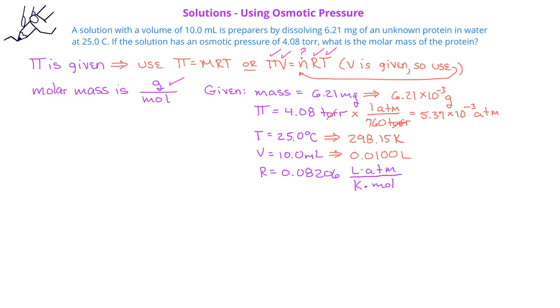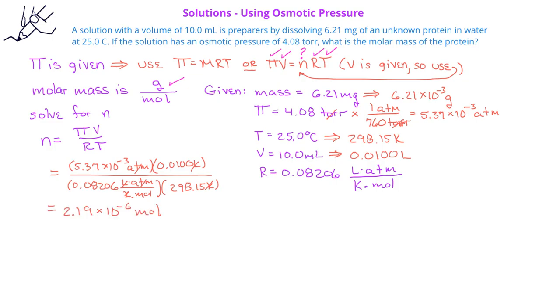we can solve by rearranging the equation to identify the number of moles n. When we plug in the values for π, V, r, and T, we find that we have 2.19 times 10 to the negative 6 moles of protein present.